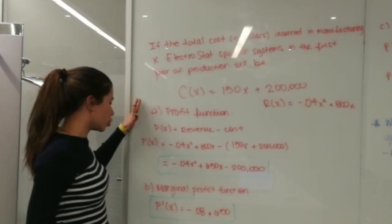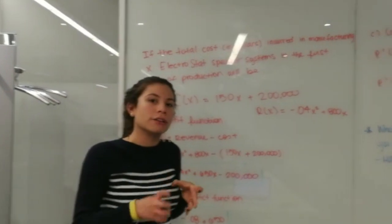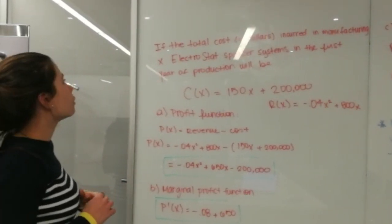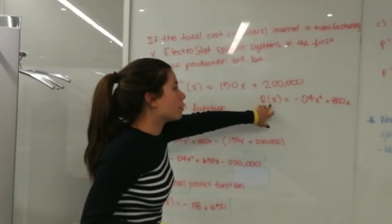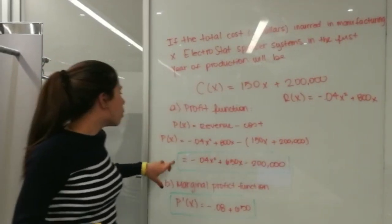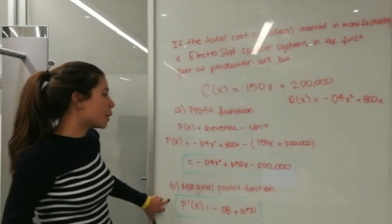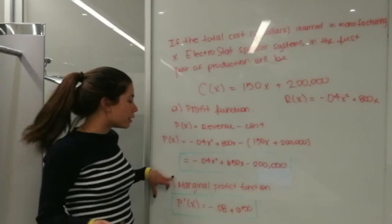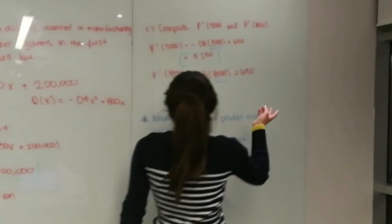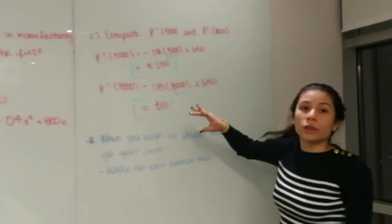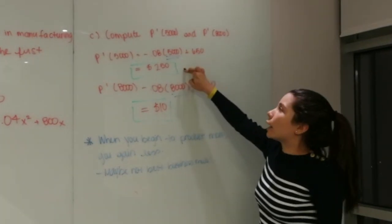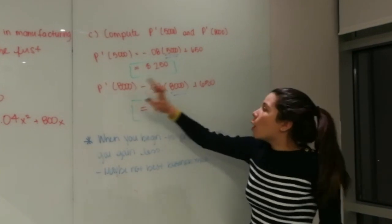In this example, we're going to see the profit function, the marginal profit function, and how the difference in units — more or fewer units — affects your profit. If the total cost in dollars incurred in manufacturing electric stud speaker systems is the following cost function, and this is the revenue function, then the profit function is revenue minus cost — we plug in the revenue function minus the cost function to get the profit function. The marginal profit function is the derivative of the profit function. We compute different units: plugging in 5,000 units gives a marginal profit of $250, while plugging in 8,000 units gives only $10.